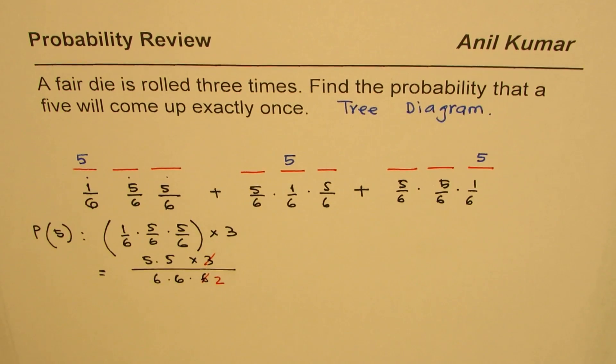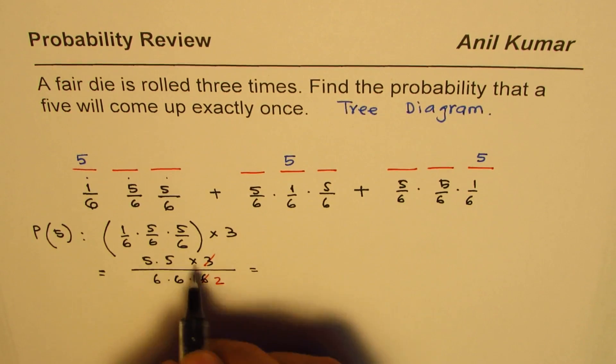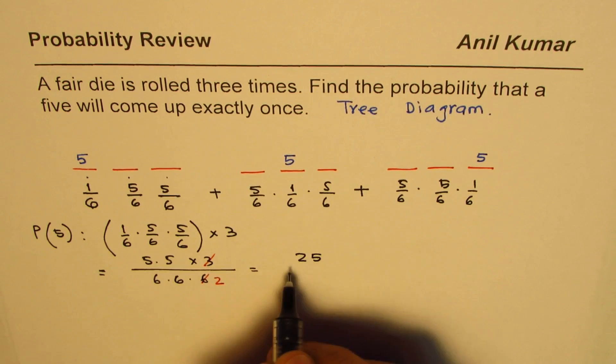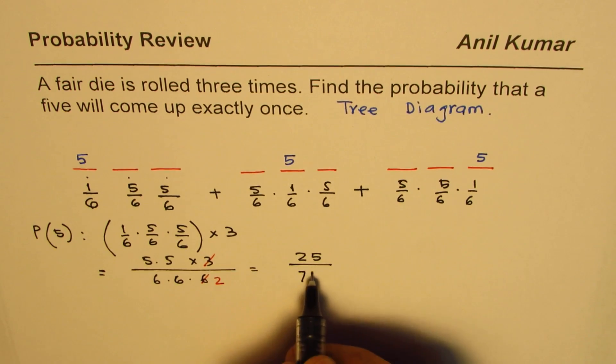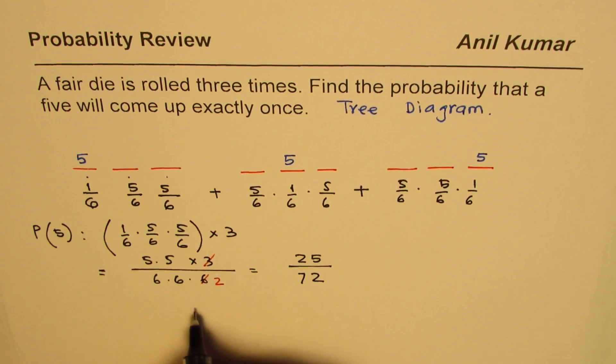It goes two times so we get five times five as twenty-five, six times six, thirty-six times two as seventy-two. So the answer is twenty-five over seventy-two.